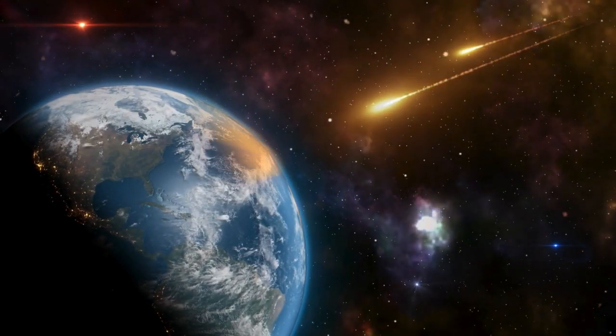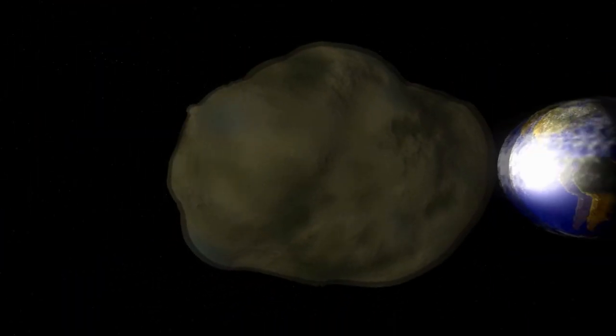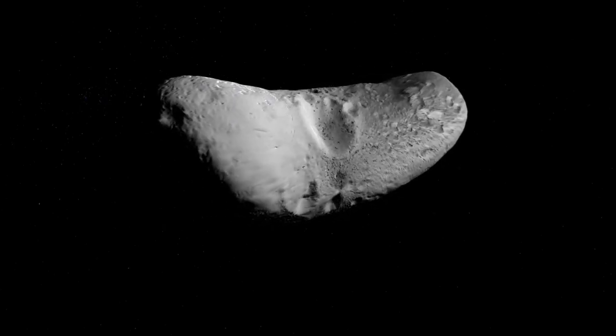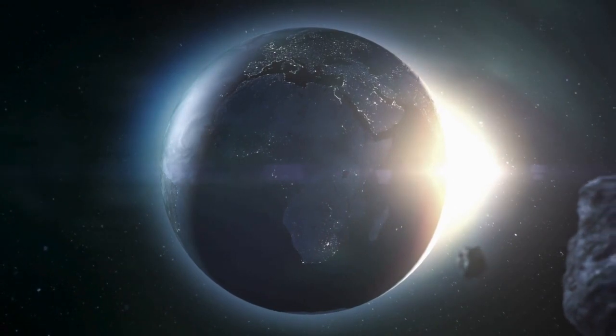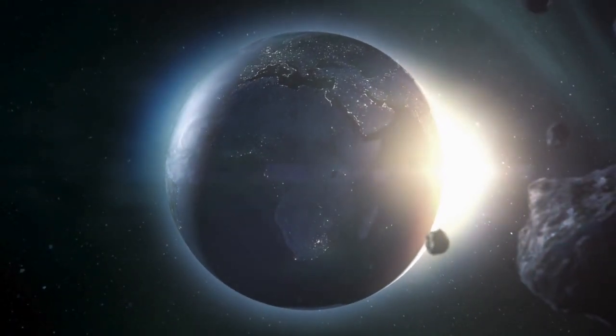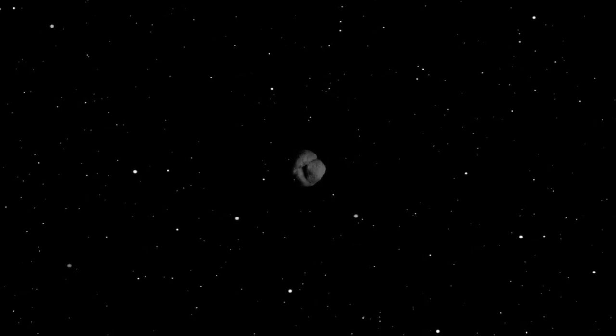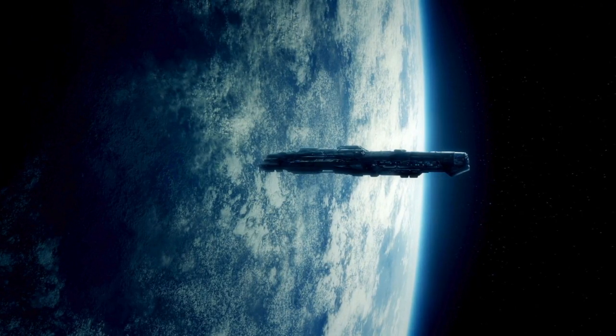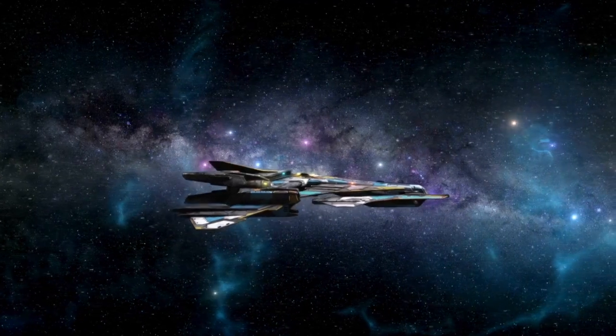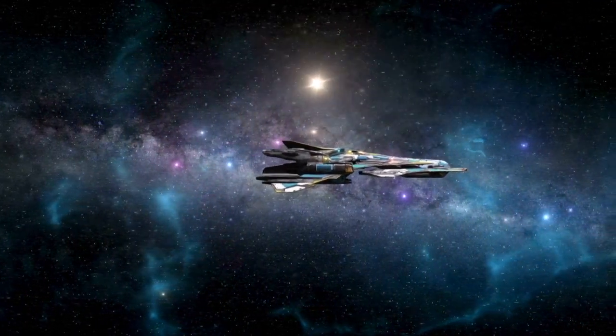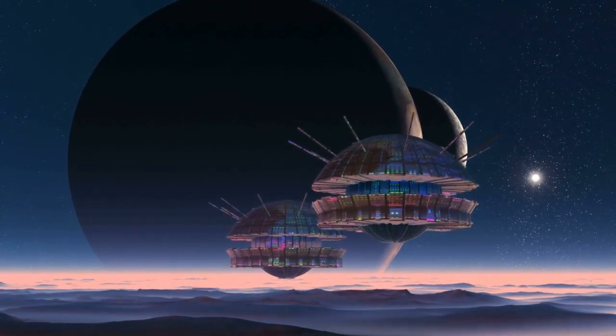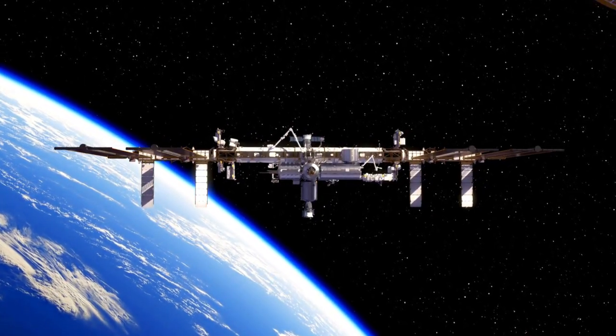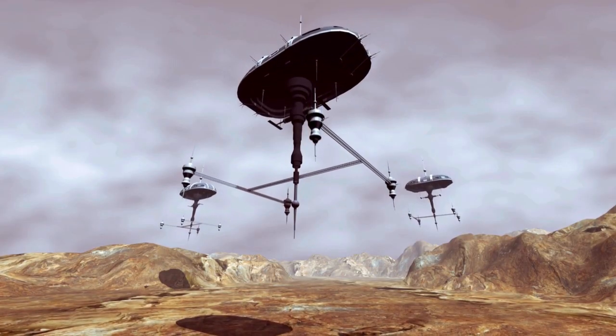However, after analyzing all known human-made objects that could fit the observed pattern, researchers ruled out that possibility. The object turned out to be spherical and about 10 meters in length. This sparked some unusual theories. Some people speculated that the object might be alien space junk, left behind by an extraterrestrial civilization. Strange, right? It's not exactly how we imagine confirming the existence of intelligent life, by spotting their discarded trash floating in space. Still, in these kinds of investigations, all possibilities must be considered, no matter how odd they seem. In the end, the explanation was much simpler and more realistic.